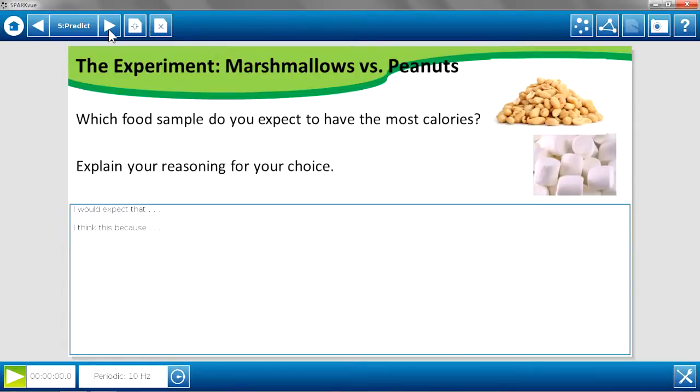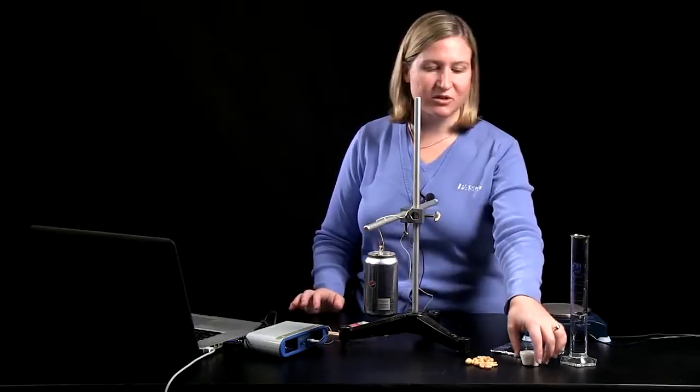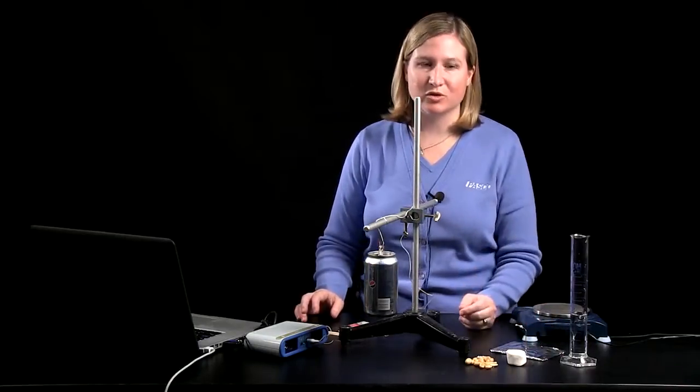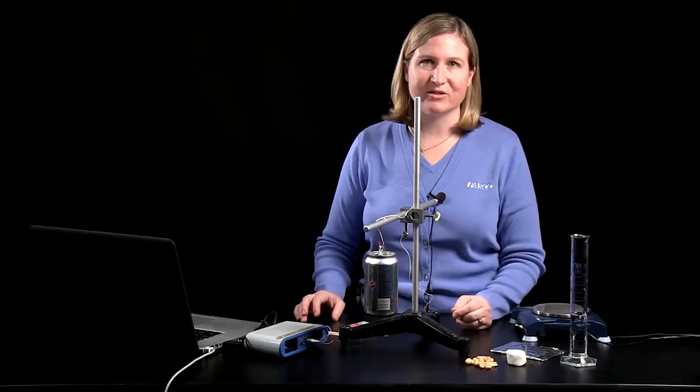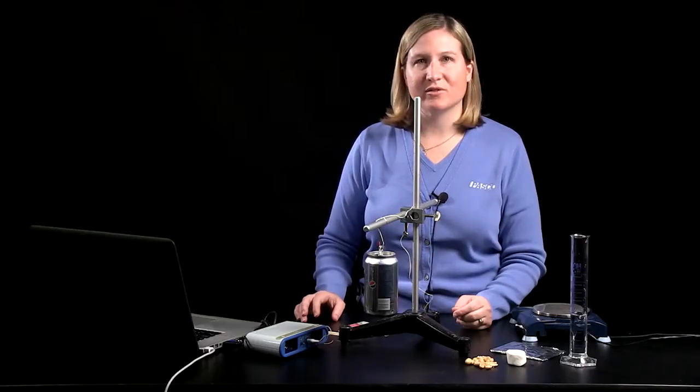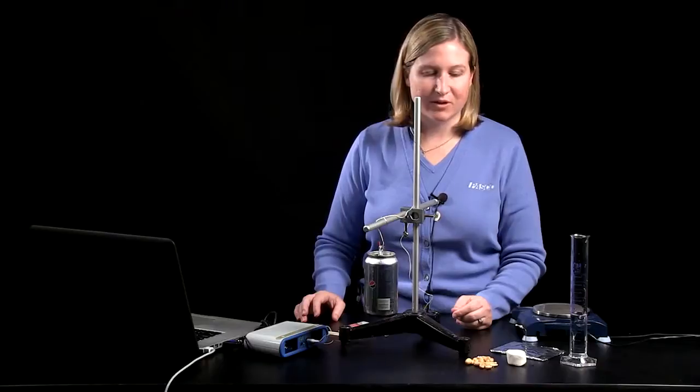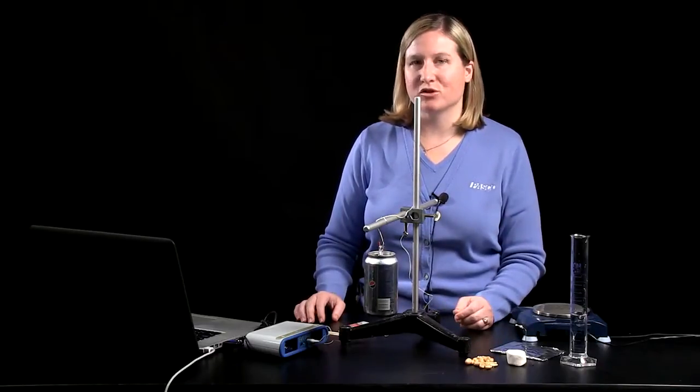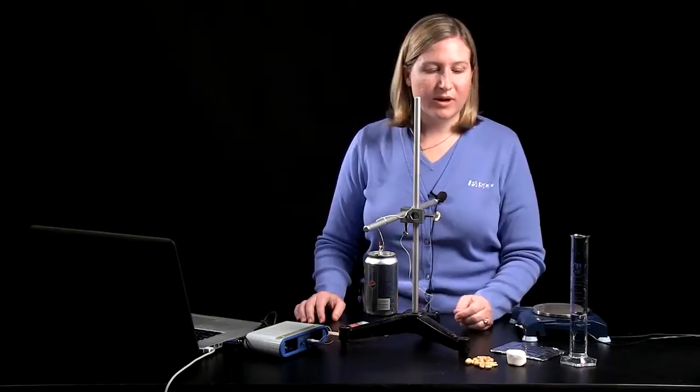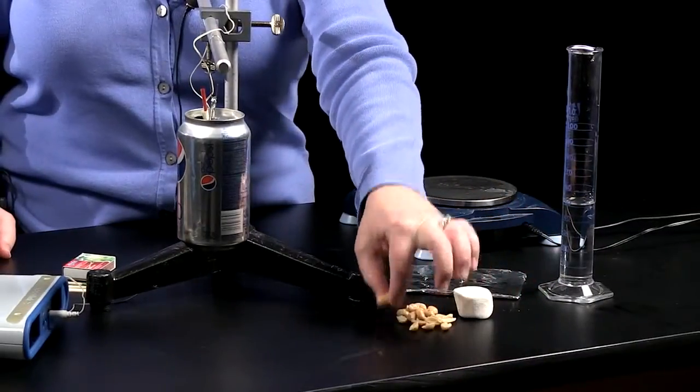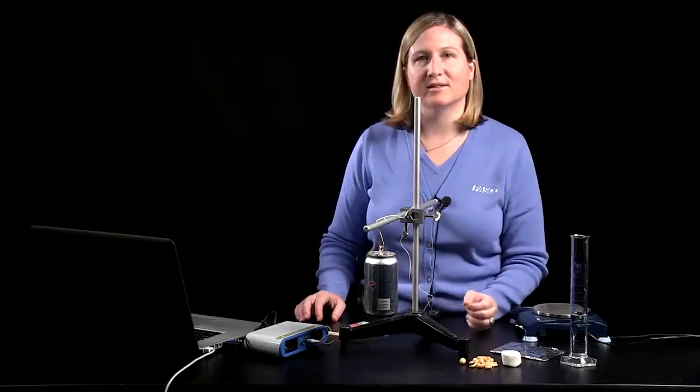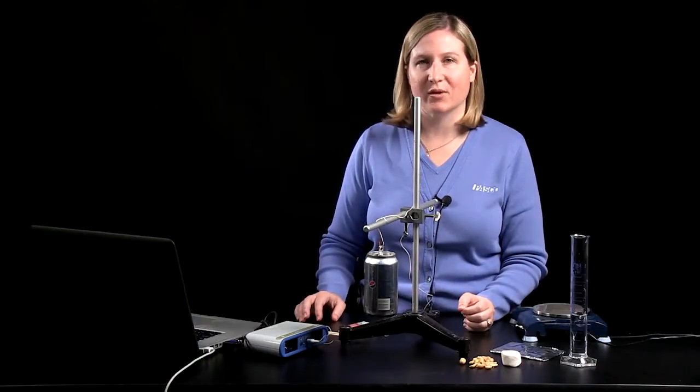So the two foods that we're going to burn in order to compare their energy content are peanuts and marshmallows. So you can just use standard marshmallows and peanuts from the grocery store. It's good to keep the packaging that they come in so that students can then compare the results of their lab to the nutrition labels that are on those packages. But don't let the students see those nutrition labels to start with. You want them to make a prediction, the marshmallow or peanut, which one has the most energy content, the greatest number of calories.